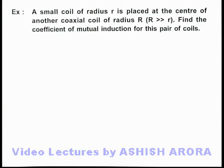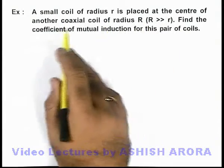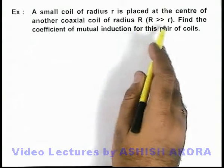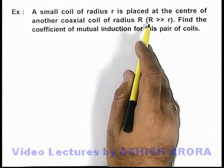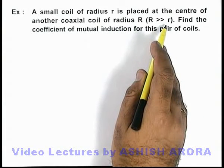In this example we are given that a small coil of radius r is placed at the center of another coaxial coil of radius capital R. We are also given that the radius of the coaxial coil is very large compared to that of r.